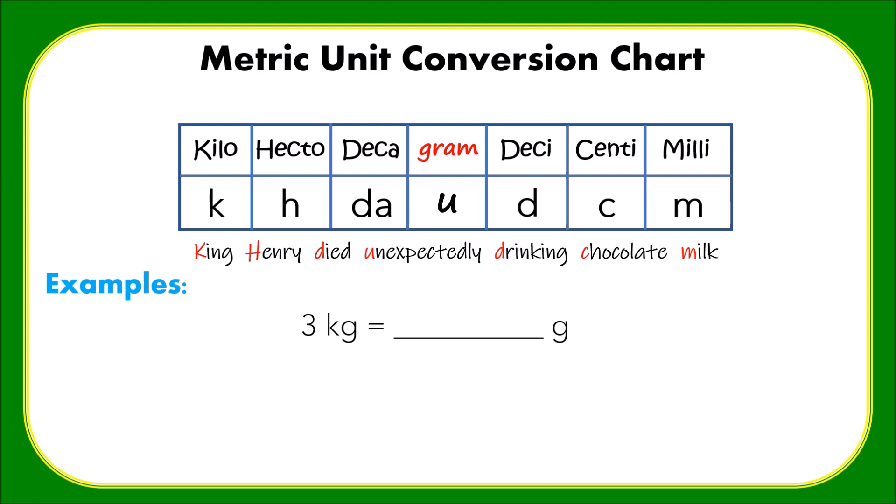First, we have to know where is the decimal point. Since 3 is a whole number, the decimal point is on its right. Next, using the order of unit conversion, let's identify how many places do we need to move our decimal point. From kilogram to gram, we have 1, 2, and 3. So from here we will start moving our decimal point three places to the right, and for every blank space we will write zero on it.